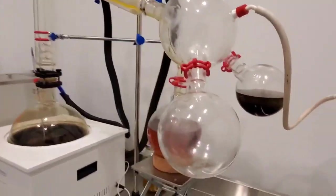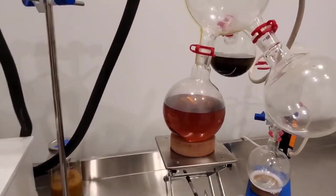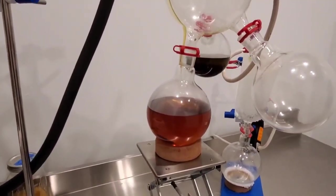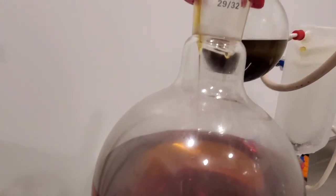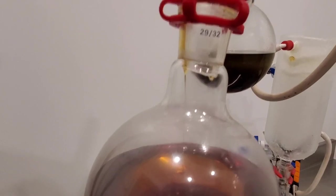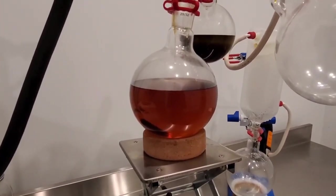The second collection flask that we have is our mains. This is the good stuff. This is where we're collecting a majority of our CBD. And as you can see, it's pouring in there nice and smooth right now in a nice golden color. That's what you want to see.